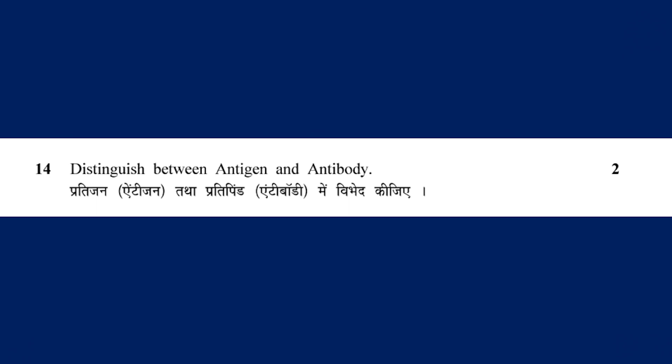To distinguish between antigen and antibody: an antigen in the body is a foreign substance. An antibody is produced by the body's immune system when it detects harmful substances called antigens.